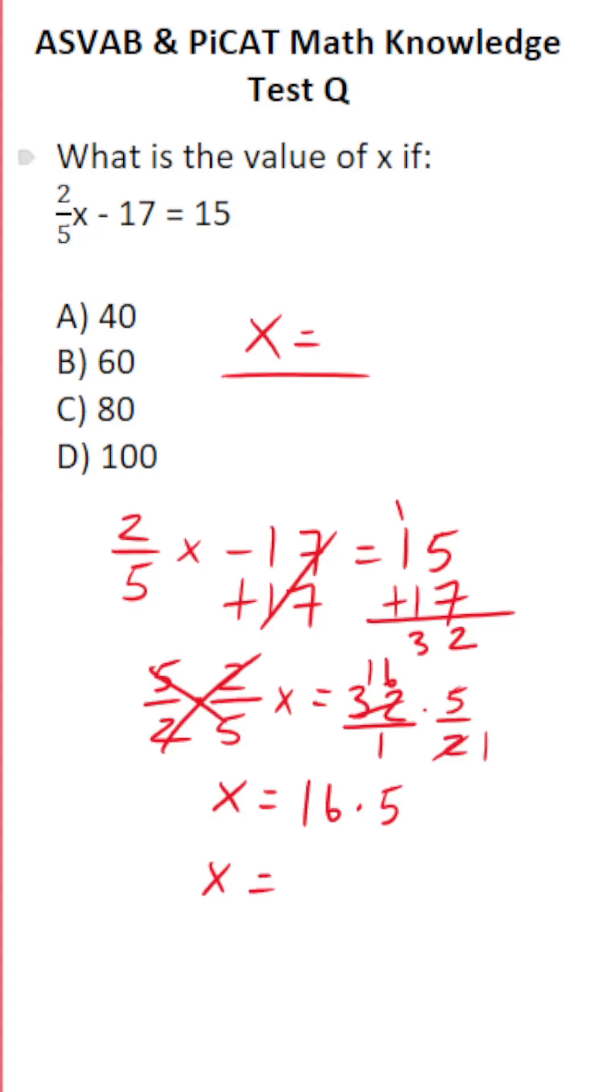If you can't do that mentally, do it off to the side again. On test day you will have scratch paper. 6 times 5 is 30, bring down a 0, carry a 3. 1 times 5 is 5 plus 3 is 8. So x in this case is going to be C, 80.